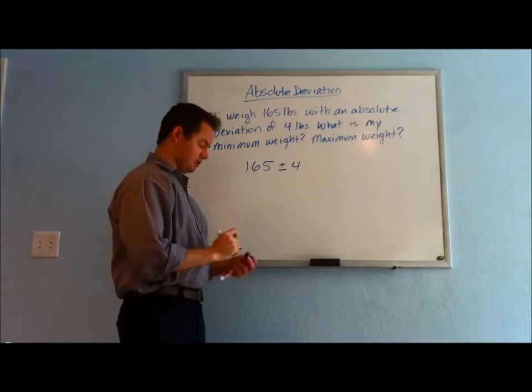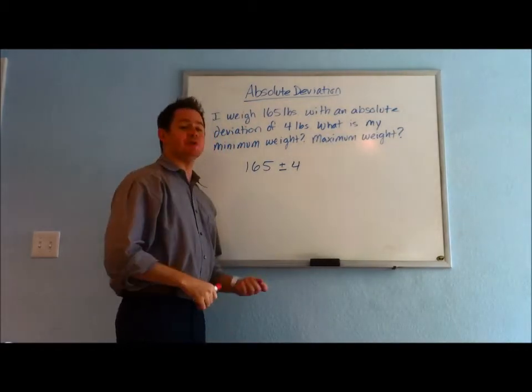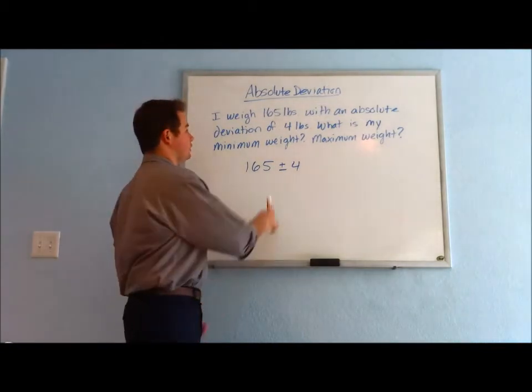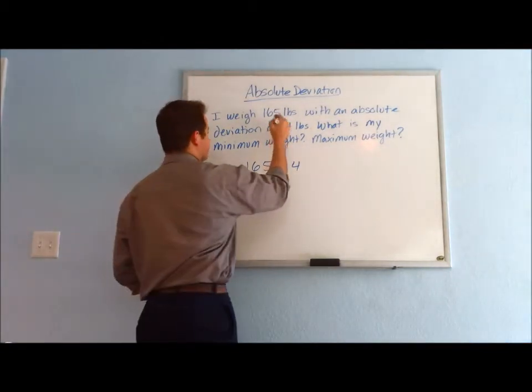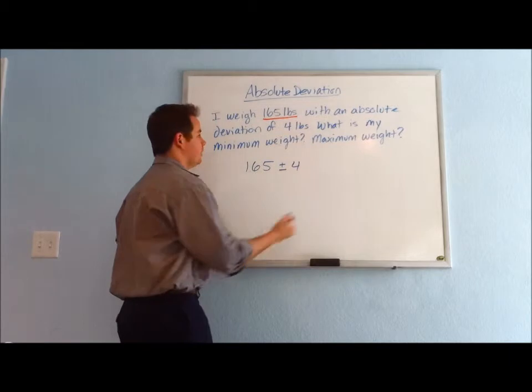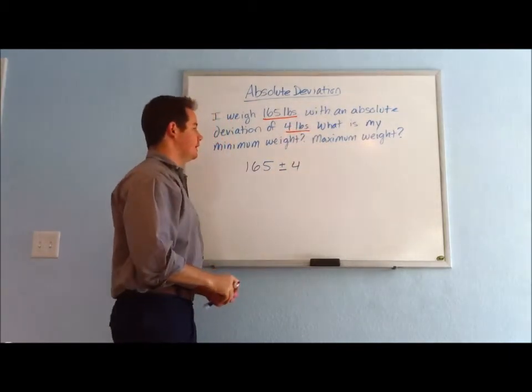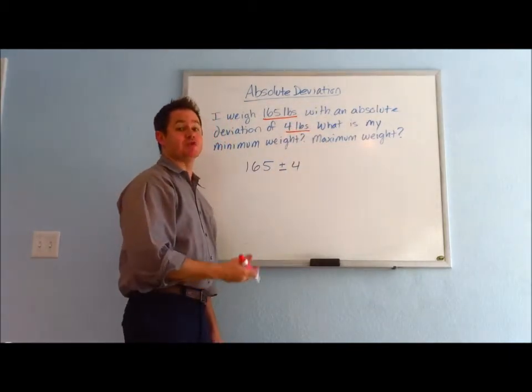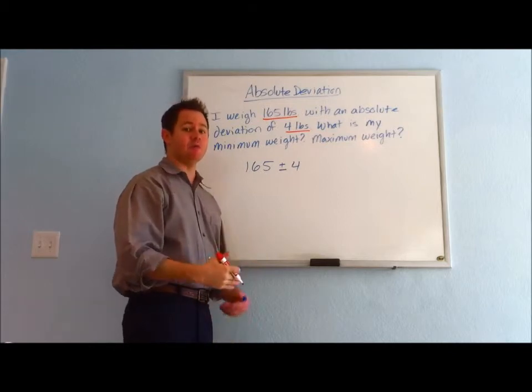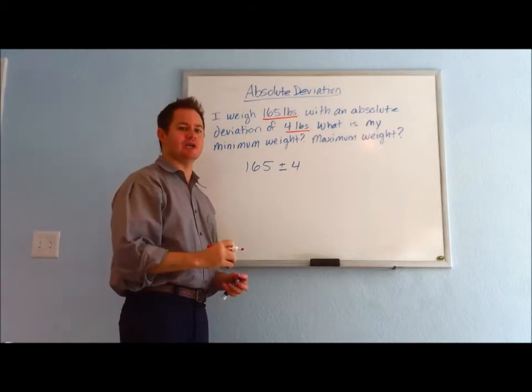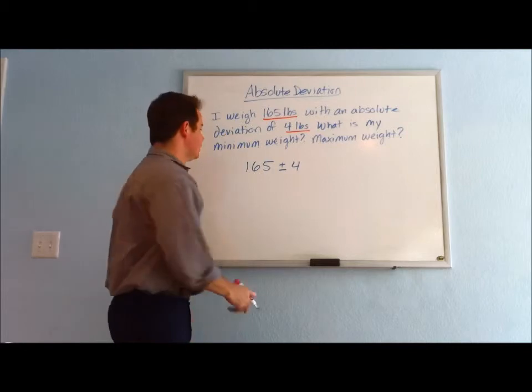To get your maximum or minimum, you simply look at what your original number is, 165, what your absolute deviation is, 4. Then for minimum, we'll be subtracting, and for maximum, we'll be adding that absolute deviation to our original value.